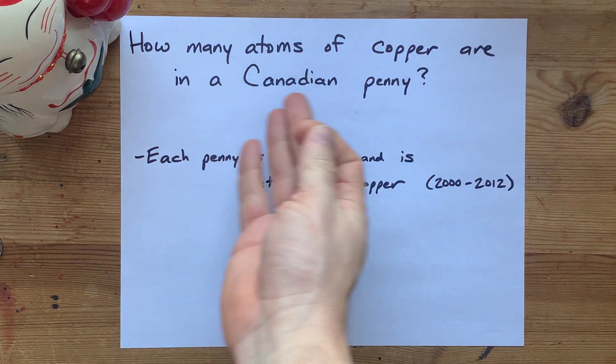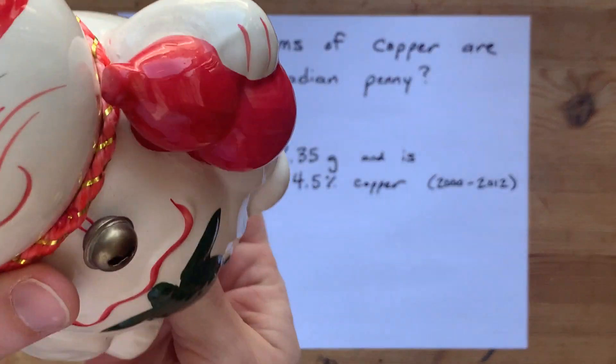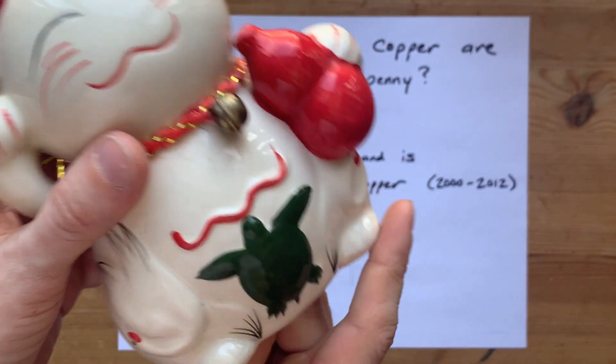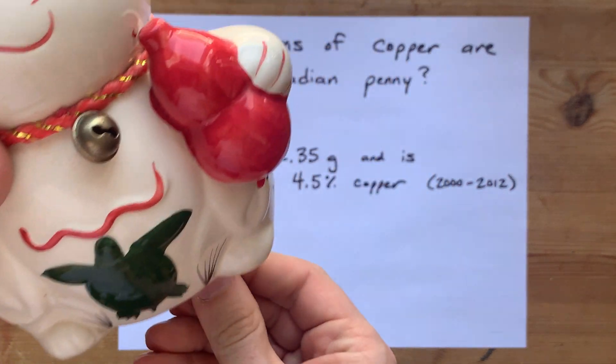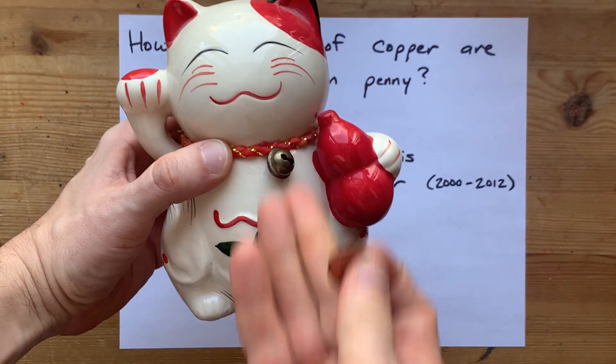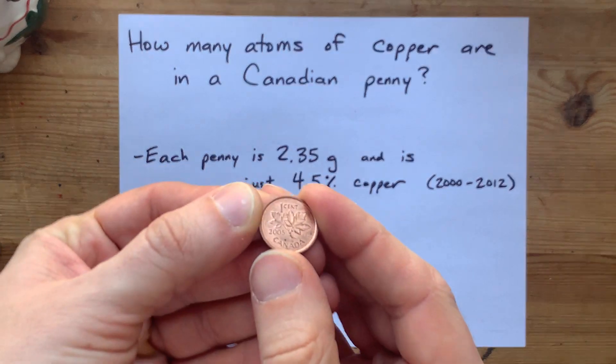How many atoms of copper are in a Canadian penny? For those of you who don't know what a penny is, let me reach inside the piggy bank here. This piggy bank is a cat waving at me with a turtle on its belly. If you can tell me what that means, tell me in the comments because I have no idea. Oh, I grabbed a penny first try. Look at that.